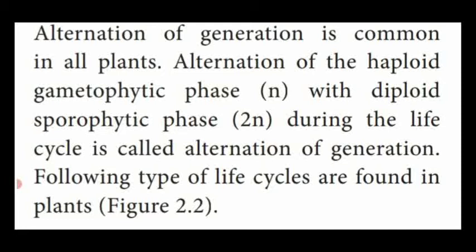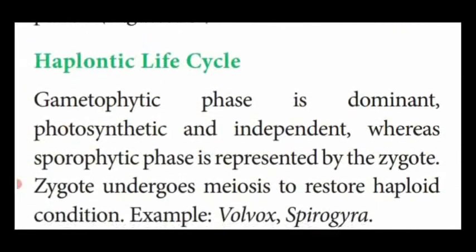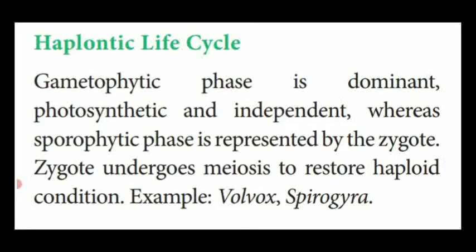An important definition: the alternation of the haploid gametophytic phase (n) with the diploid sporophytic phase (2n) during their life cycle is known as alternation of generation. Based on the number of chromosomes, plants show different life cycles. The first one is the haplontic life cycle. In this life cycle, the gametophytic phase is haploid and the sporophytic phase is diploid.